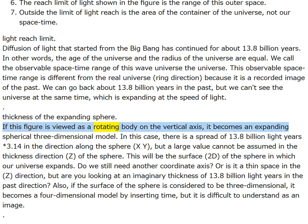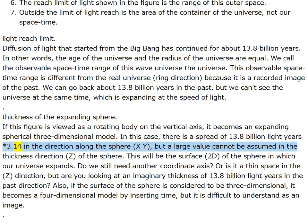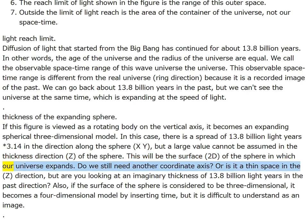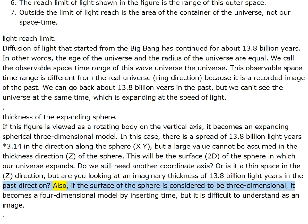Viewed as a rotating body on the vertical axis, this becomes an expanding spherical three-dimensional model. There is a spread of 13.8 billion light years × 3.14 in the direction along the sphere XY, but a large value cannot be assumed in the thickness direction Z of the sphere. This will be the surface 2D of the sphere in which our universe expands. If the surface of the sphere is considered three-dimensional, it becomes a four-dimensional model by inserting time.